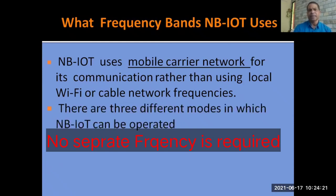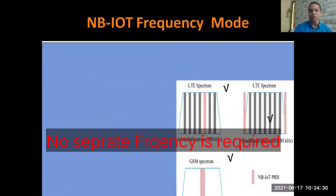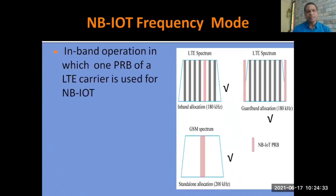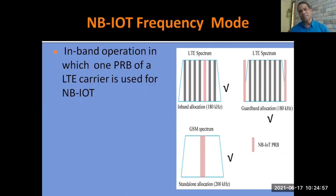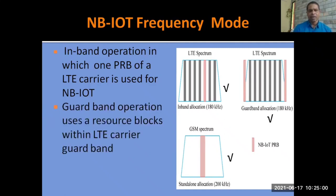There are three different modes in which NB-IoT can be operated. The first is in-band operation, in which one PRB of the LTE carrier is used for NB-IoT — that is, one physical radio band of 180 kHz is dedicated to NB-IoT only out of many bands. The second is guard band operation, which uses a resource block within the LTE carrier, and NB-IoT uses that guard band for its transmission.